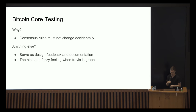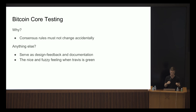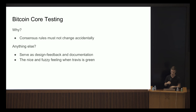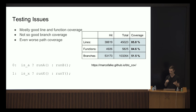On testing — I'm not going to explain testing in general. For Bitcoin Core, the most important reason in my opinion is that we need a harness to check that consensus rules do not change accidentally. Other advantages include the design feedback loop when you write a new feature. And there's the nice warm and fuzzy feeling when Travis is green — Travis is the continuous integration we use on the GitHub project.